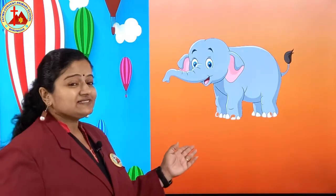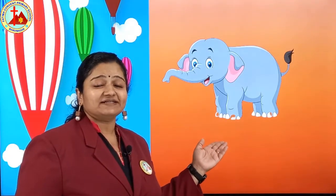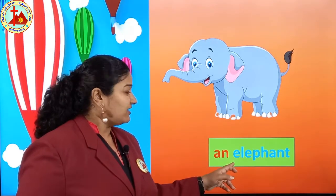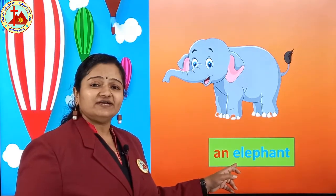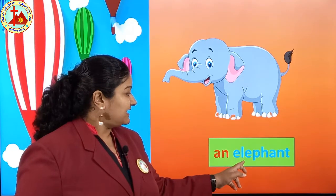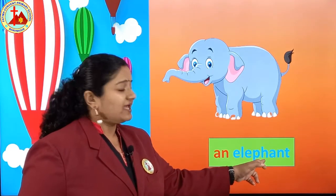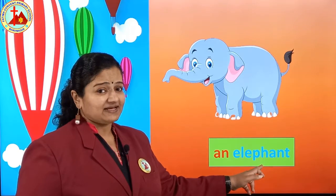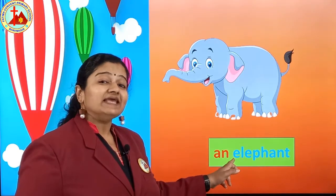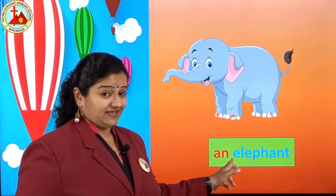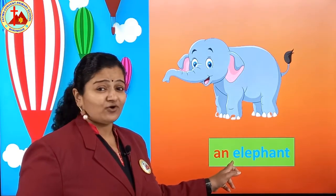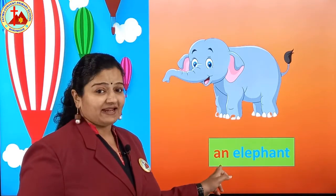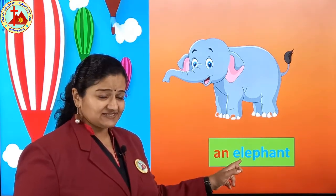Next one is the picture of elephant — a large animal. Spelling of elephant: E, L, E, P, H, A, N, T — elephant. First letter is E. E is a vowel. Then we put: an elephant.